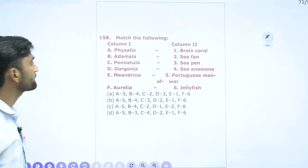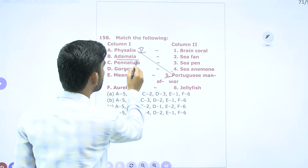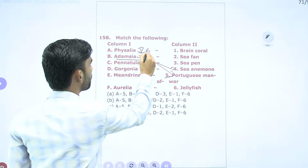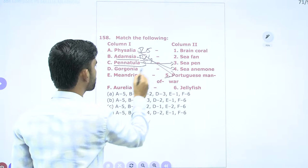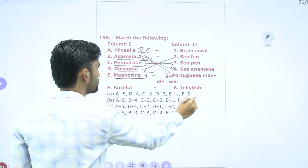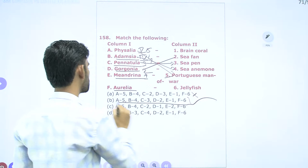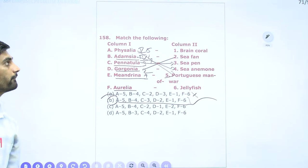Question 158: Match the following. Physalia: Portuguese man-of-war (5). Adamsia: sea anemone (4). Pennatula: sea pen (3). Gorgonia: sea fan (2). Meandrina: brain coral (1). Aurelia: jellyfish (6). So the sequence is 5, 4, 3, 2, 1, 6. Option B is the correct answer.